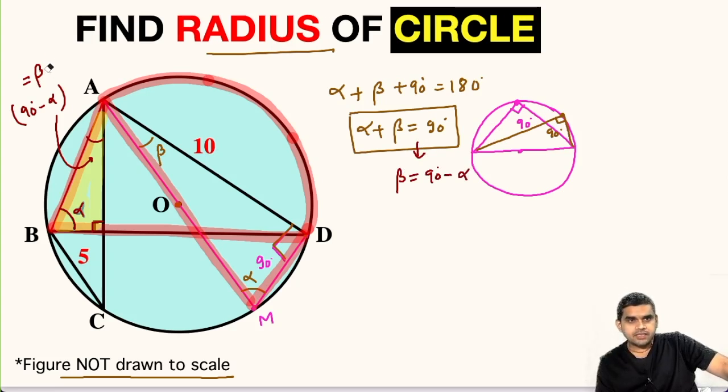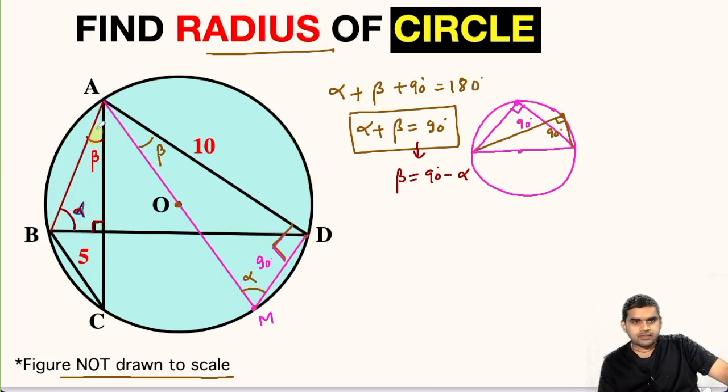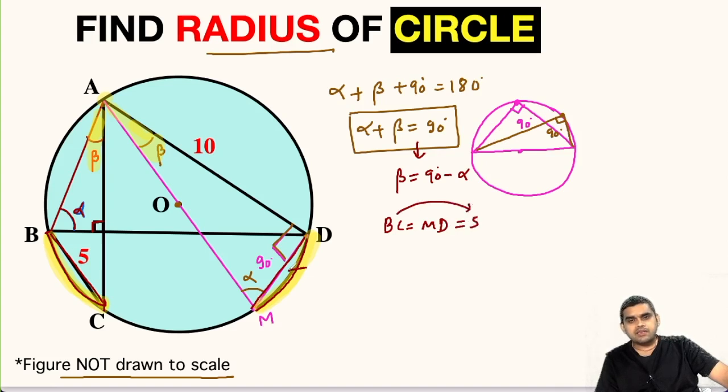Now we have got that this angle is beta and this angle is also beta. We have this arc BC and this arc MD subtending equal angles beta. So these two arcs must be equal in length. This is another property that equal arcs subtend equal angles. So on the circumference of this circle, arcs BC and MD are subtending equal angle beta, so they must be equal in measure. Now if arc BC equals arc MD, then line segment BC must also equal line segment MD. So BC equals MD, and BC is given to us as 5 units, so MD will also be 5 units.